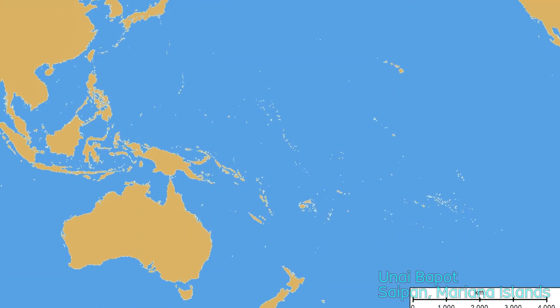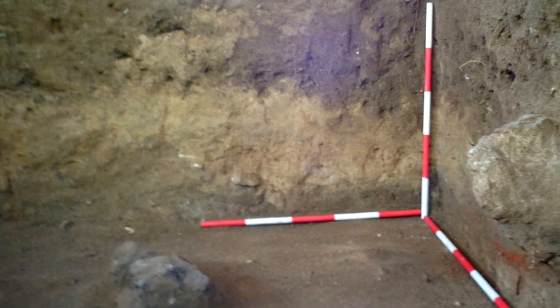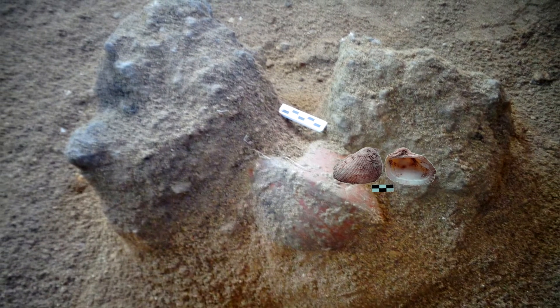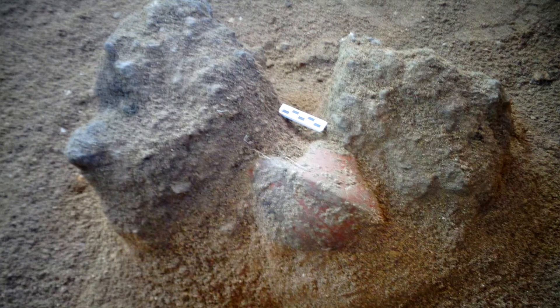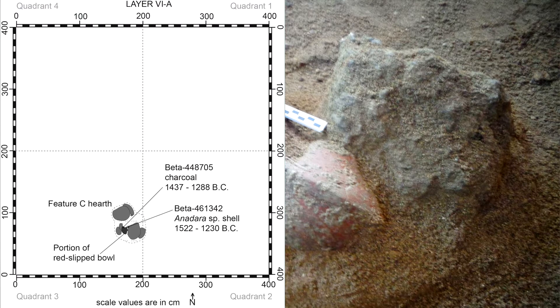In another example at the site of Unaibaput in Saipan, an excavation exposed several layers with secure hearths and other features. In one of the lower layers, a hearth remnant contained red slipped pottery along with both wood charcoal and marine shells. This context was ideal for testing the reliability of shells for radiocarbon dating, specifically looking at Anadara clam shells that appeared abundantly in the earliest archaeological layers of the region. The results showed that the standard marine calibration curve for the shell sample was accurate and matched well with the terrestrial calibration curve for the wood charcoal sample.